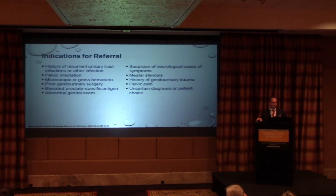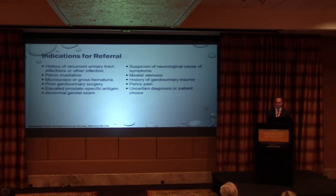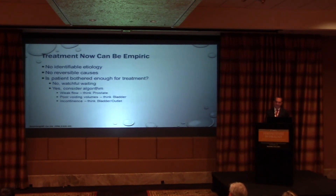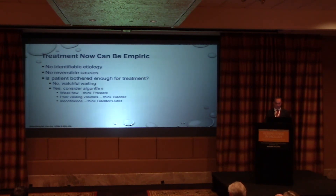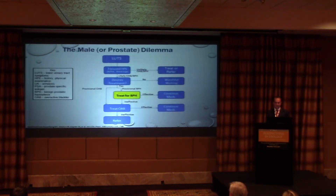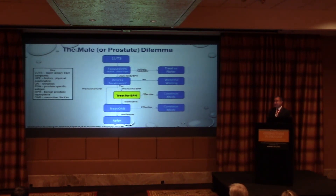The most important thing to share with primary care colleagues is how to stay out of trouble: simple evaluation tools, effective treatment, and safety — and show them when to refer to you. Once the evaluation is done, ask the patient: with your LUTS, are you bothered enough to want treatment? If not, follow up. If it's flow, think prostate; if it's voiding volumes, think bladder; if it's incontinence, think bladder or outlet. If you're unsure whether it's the prostate, treat the prostate first and then address the bladder.